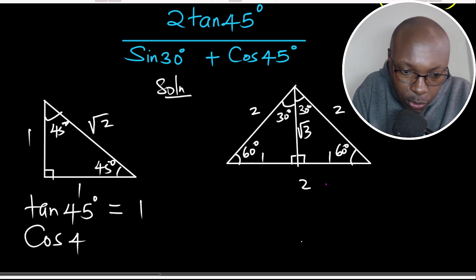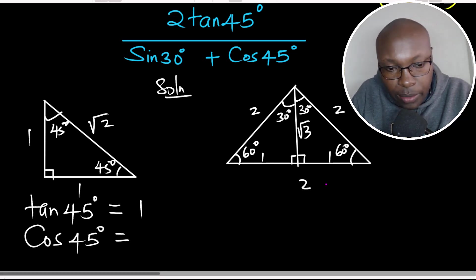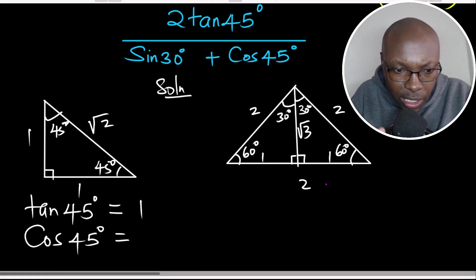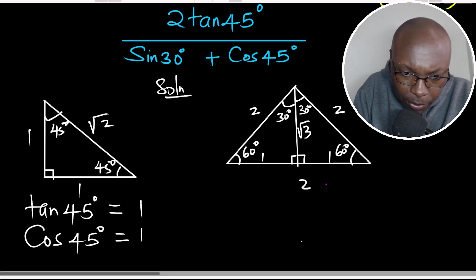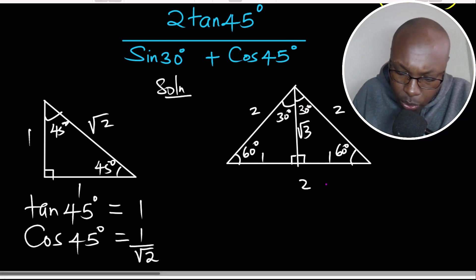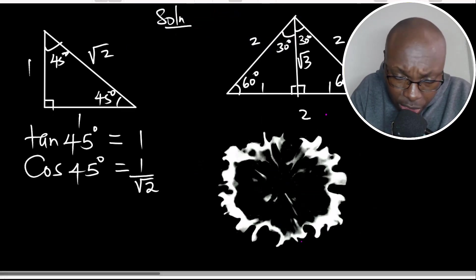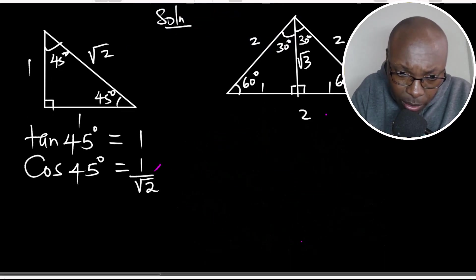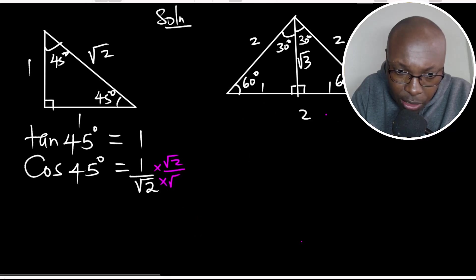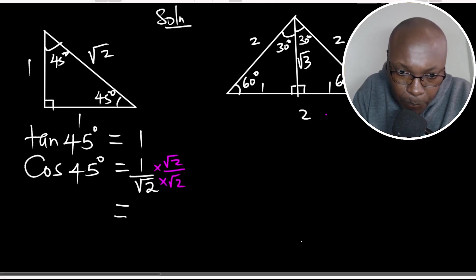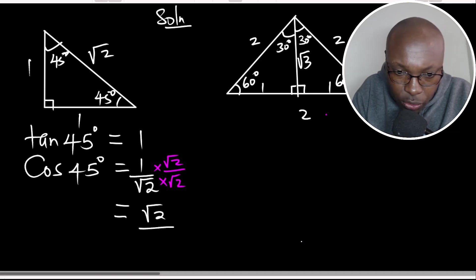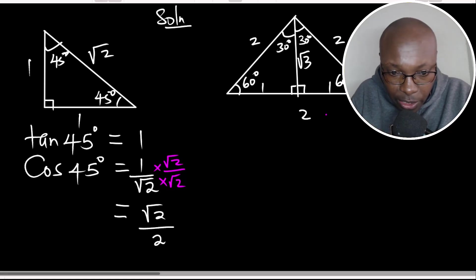Cosine of 45 degrees: cosine is the adjacent side divided by the hypotenuse. Considering the 45-degree angle, the adjacent side is 1 and the hypotenuse is root of 2. So cosine of 45 is 1 over root 2. We rationalize this by multiplying both numerator and denominator by root of 2, giving root 2 divided by 2.